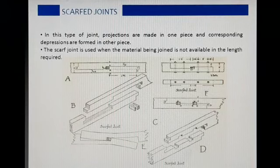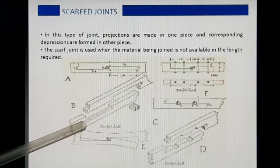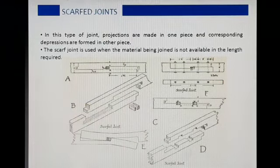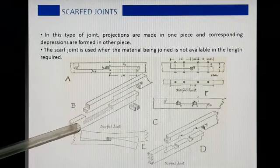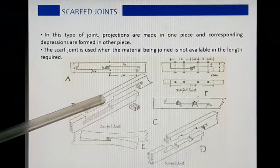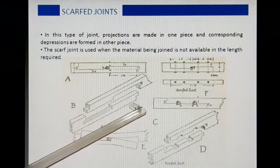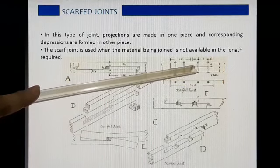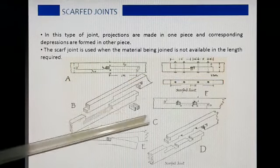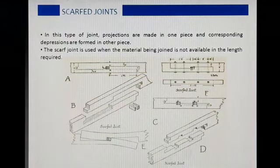तीसरे तरह का lengthening joint है scarf joint. इस प्रकार के joint में हम एक piece के अंदर projections बनाते हैं, और दूसरे piece में उसी तरह के depressions create कर देते हैं. इन दोनों wooden pieces को तैयार करने के बाद इनको आपस में fit कर दिया जाता है. Fitting को और secure और strong करने के लिए wedge pieces भी insert किये जाते हैं, जो elevation में clearly visible हैं, और boards के माध्यम से भी दोनों members को join किया जाता है.